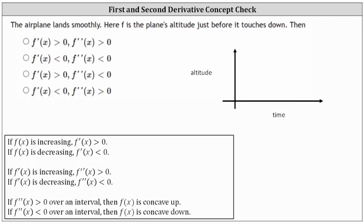Now, that may sound a little strange. If the rate of decline is increasing, this does not mean the plane is going to be going down faster and faster — it's actually going to be going down slower and slower. For example, 30 seconds from touchdown the change in altitude might be negative 100 feet per second; 20 seconds before landing, negative 50 feet per second; 10 seconds before landing, negative 20 feet per second; 5 seconds before landing, negative 5 feet per second; and one second before landing, just negative 1 foot per second. So the altitude is decreasing, which is why the first derivative is negative. But these rates of change — negative 100, negative 50, negative 20, negative 5, negative 1 — are increasing, which is why the first derivative is increasing and the second derivative is positive.